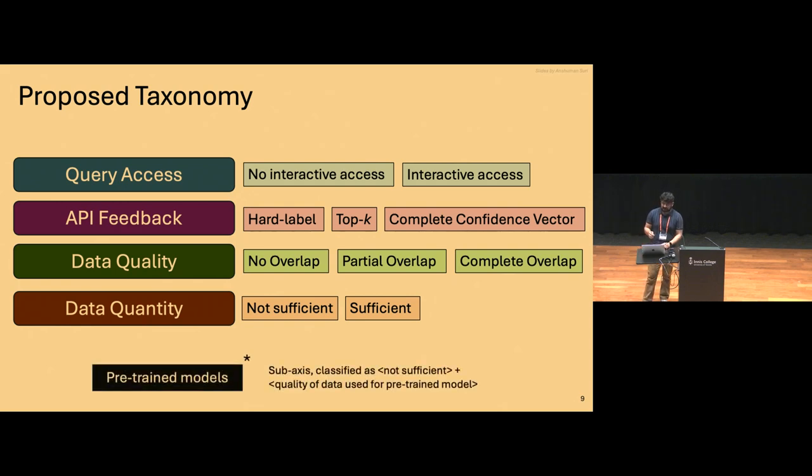And finally, there's also this concept of pre-trained model access, which we really call a sub-axis. And the reason is that, at least in the vision domain, this is more of an artifact based on the kind of advancements we have. And if you're really trying to fool a target model that's been trained on ImageNet, there is a ton of models available on the internet, which were also trained on ImageNet, which can be used as good starting points for adversaries. But this may not be true for more real world situations like malware classifiers, which is why any sort of attacks that use pre-trained models, we club them in the category that has sufficient data but does have high overlap or any kind of overlap depending on the pre-trained model.